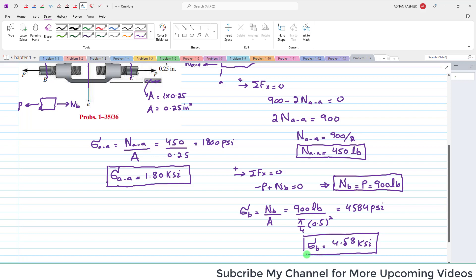This is the answer of part B. And since sigma B is equal to sigma C, sigma B and sigma C is equal to 4.58 ksi.